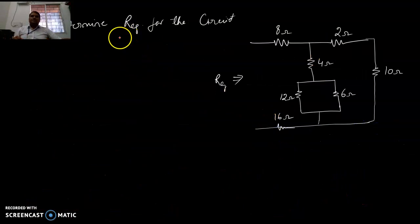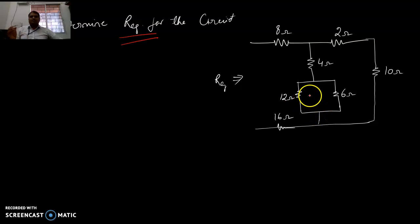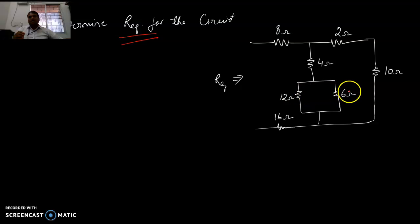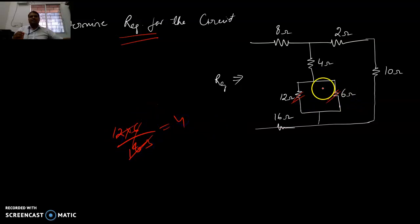Another problem: find the R equivalent of the circuit. When R equivalent is asked, try to solve from the back using small steps. Here 12 ohm and 6 ohm are in parallel: 12 times 6 divided by (12 plus 6) equals 4 ohms. So replace the 12 and 6 with 4.